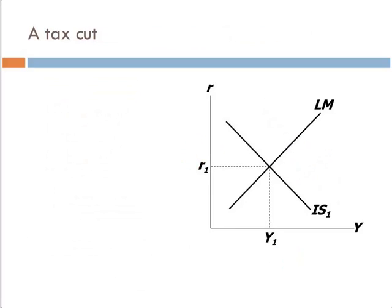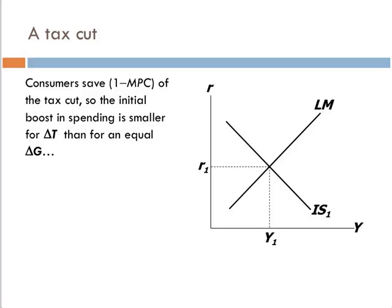What about a tax cut? Well, consumers save 1 minus MPC of their tax cut. So, the initial boost to spending is smaller for delta T than for an equal delta G. Remember, we found that out. And remember that the multiplier for taxes is minus MPC over 1 minus MPC. Remember, a tax cut is expansionary. A tax increase is contractionary. That's why it's negative. And remember that the government spending multiplier and the tax multiplier sum to 1. So that's all review from chapter 10.